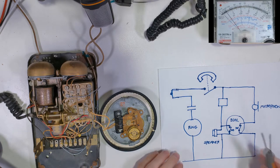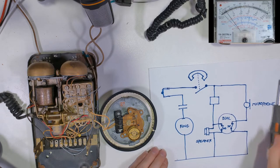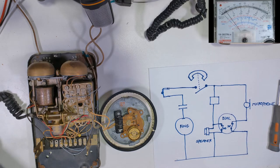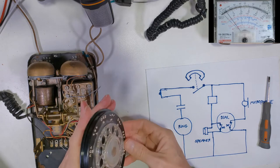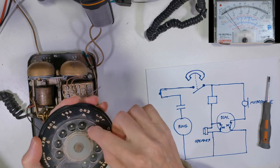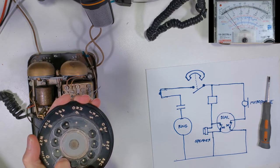Now the pulse dial system basically means that the phone exchange knows what number you are dialing by how many pulses it gets. So let's have a look at the meter and see what happens if we dial a five. So we go to the end stop, nothing happens, but when it springs back, look at the meter.